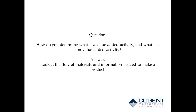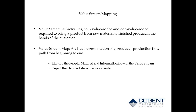The question is: we've talked about value-added and non-value-added — how do you know what it is? You look at the flow of materials and the flow of information needed to make a product in your value stream. A value stream is all the activities — both those that add value and those that don't — required to take a product from raw material to finished product in the hands of the customer. The value stream map is simply a visual representation of all these activities from beginning to end, identifying the people, material, and information that flow through the value stream.